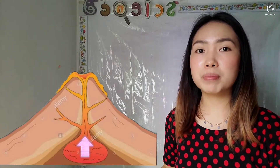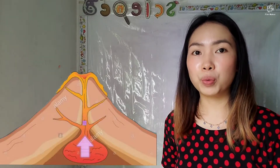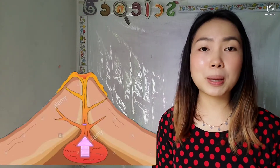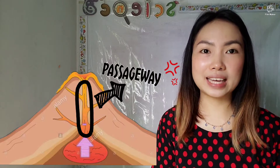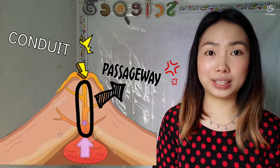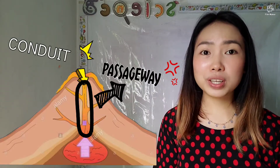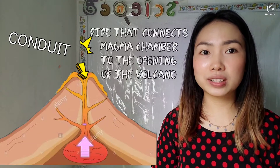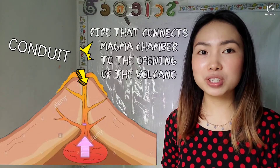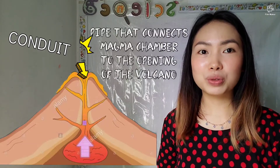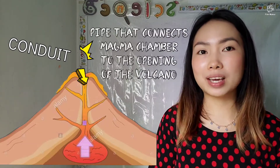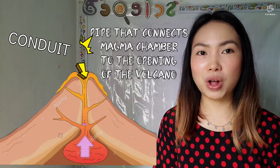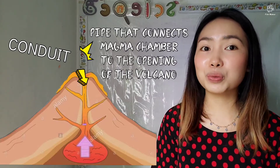The magma from the magma chamber will go up into its passageway called the conduit. Conduit is also the pipe that is connected from the magma chamber to the opening of the volcano. That is what we call the conduit.